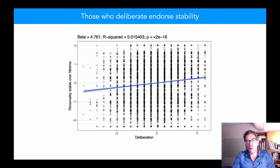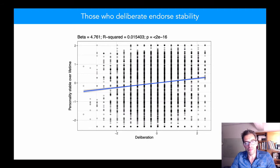Deliberation, the extent to which people like to plan things and to deliberate over their decisions, is positively associated with the belief that people's personality is stable over their lifetime. It's also positively associated with the homo economicus rational model of human behavior.